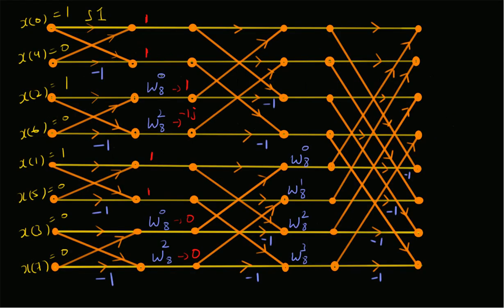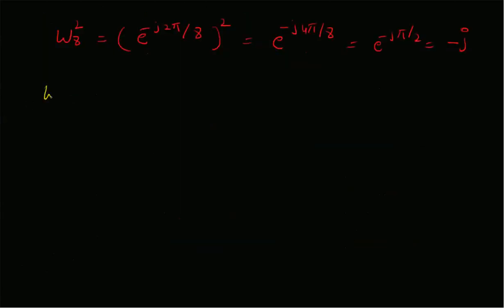Moving to Stage 2, the Stage 1 outputs become the inputs. The Stage 2 outputs are: first output 1+1=2; second output 1+(−j)=1−j; third output 1−1=0; fourth output 1−(−j)=1+j. For the second group: 1+0=1, and the next involves W8^1.